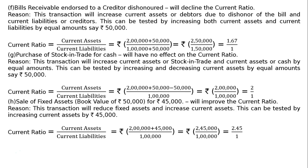Part H: Sale of a fixed asset with book value Rs. 50,000 for Rs. 45,000 will improve the current ratio. Reason: this only reduces fixed assets and increases current assets (cash received). Tested by increasing current assets by Rs. 45,000: Current ratio = (Rs. 2 lakh + Rs. 45,000) / Rs. 1 lakh = Rs. 2,45,000 / Rs. 1 lakh = 2.45:1. The ratio improves.